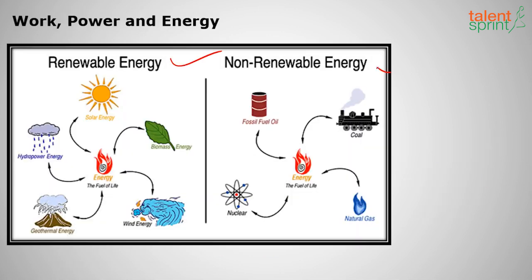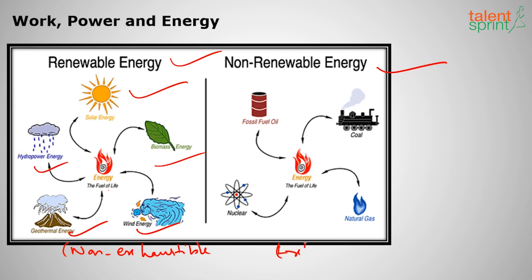Renewable energy sources — solar, hydropower, biomass, geothermal, and wind energy — are non-exhaustible. Geothermal energy uses hot water from the earth's surface, for example at Manikaran in Himachal Pradesh, to produce steam that runs turbines. Non-renewable sources like fossil fuels — petrol, diesel, coal, natural gas, and nuclear fuels — are exhaustible and will run out, so we must conserve energy and use the earth's resources effectively.